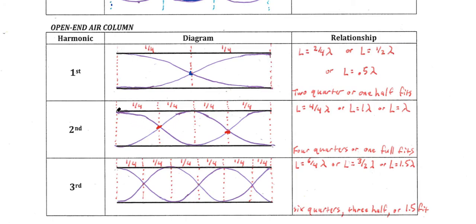How can we have two nodes? Open-ended air columns always start and end on antinodes, so we must have had to pass through a node, had another antinode in the middle, before getting to another node. If we count up how many wavelengths there are, there's a quarter, plus another quarter, another quarter, another quarter — a total of four quarters of a wavelength, which is the same as one full wavelength. So the length of this tube is equal to one full wavelength.